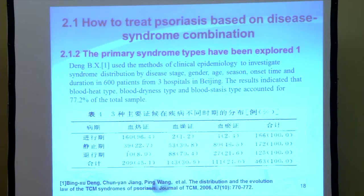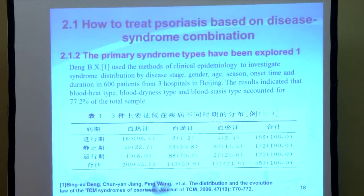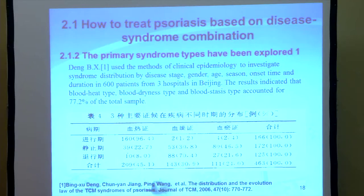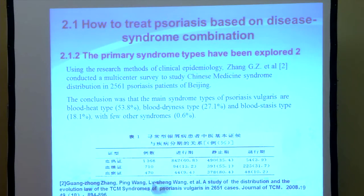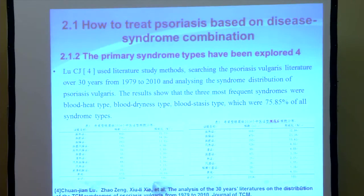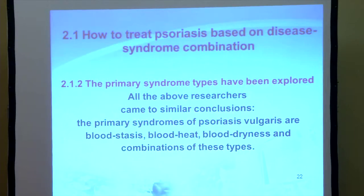Because treatment based on syndrome differentiation is the main characteristic of Chinese medicine, before a doctor writes a prescription, he should do the syndrome identification first. There have been several research studies to explore the primary syndrome types for psoriasis, conducted by Professor Deng, Professor Zhang, Professor Li, and our own research team. All research came to a similar conclusion: the primary syndromes of psoriasis vulgaris are blood stasis, blood heat, blood dryness, and combinations of these types.